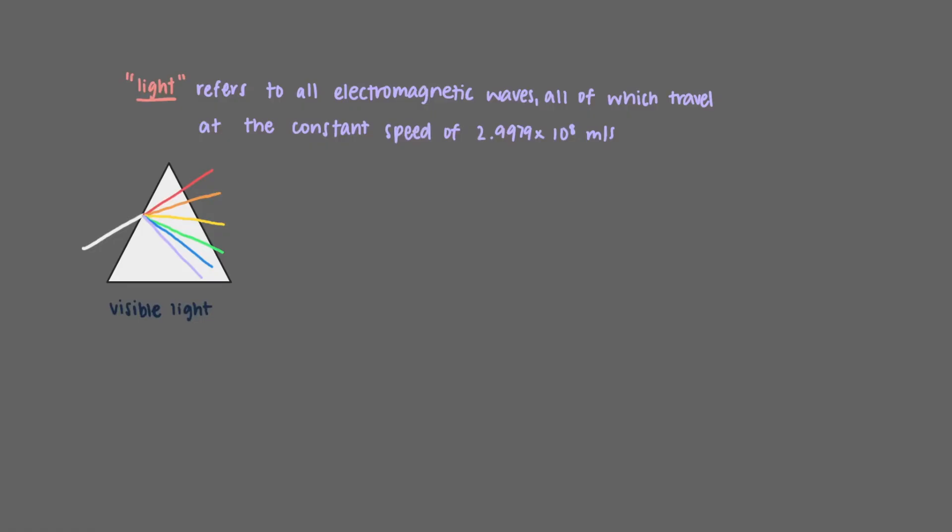In truth, light refers to all electromagnetic waves, all of which travel at the constant speed of 2.9979 times 10 to the 8 meters per second. Visible light, for example, is light with frequencies between 4.3 times 10 to the 14 hertz and 7.5 times 10 to the 14 hertz.